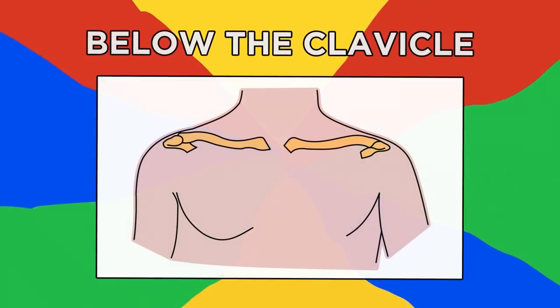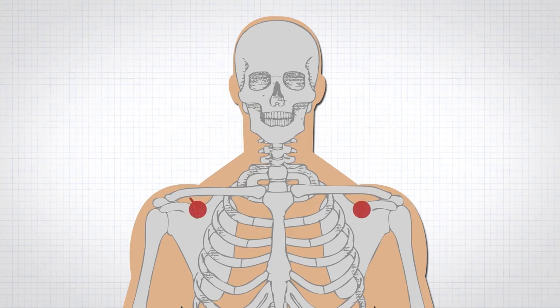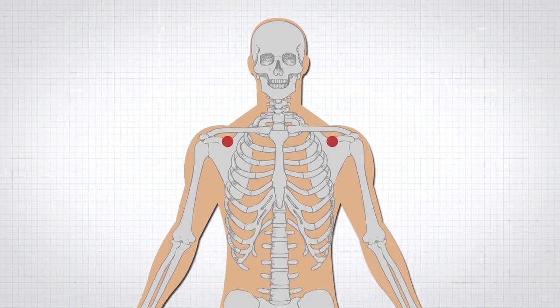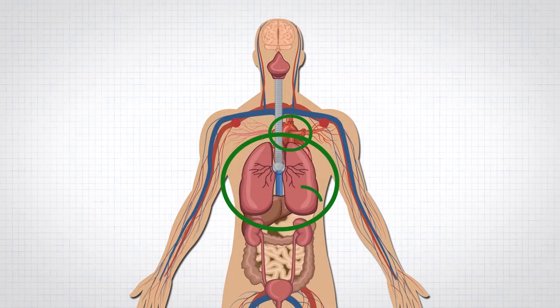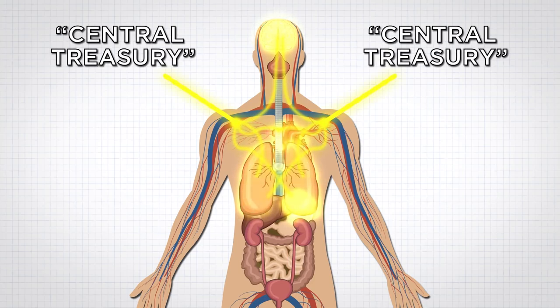Number 10, below the clavicle. Located just under the clavicle, LU1 or lung 1 as the area is known, is suggested to connect strongly to the lungs, heart, spleen, and brain. Acupressurists consider it a collection point for all the energy of the lungs, and for this reason it's also called the central treasury.